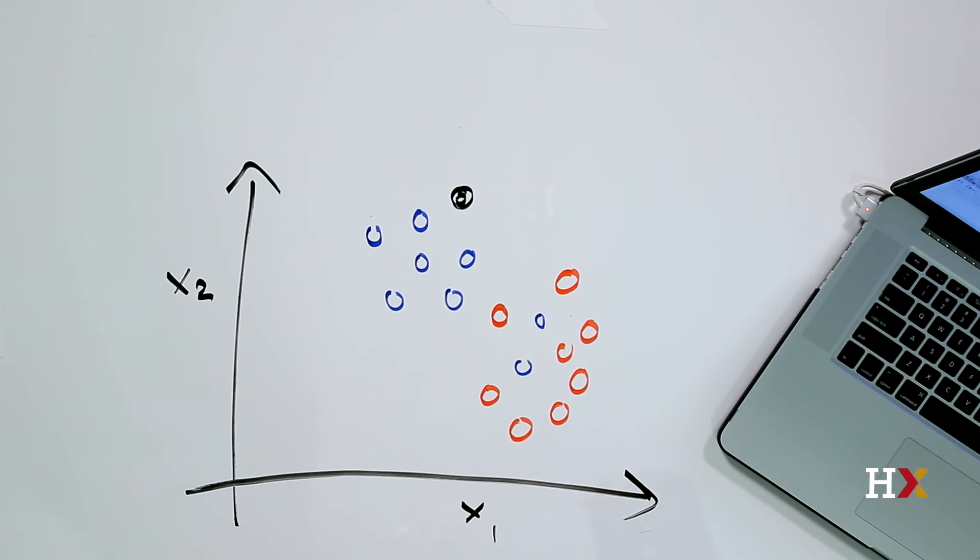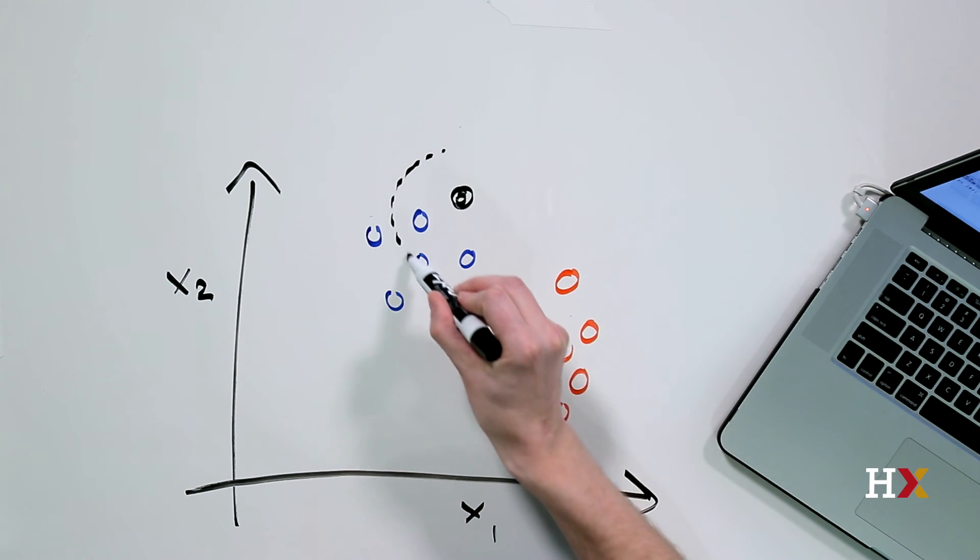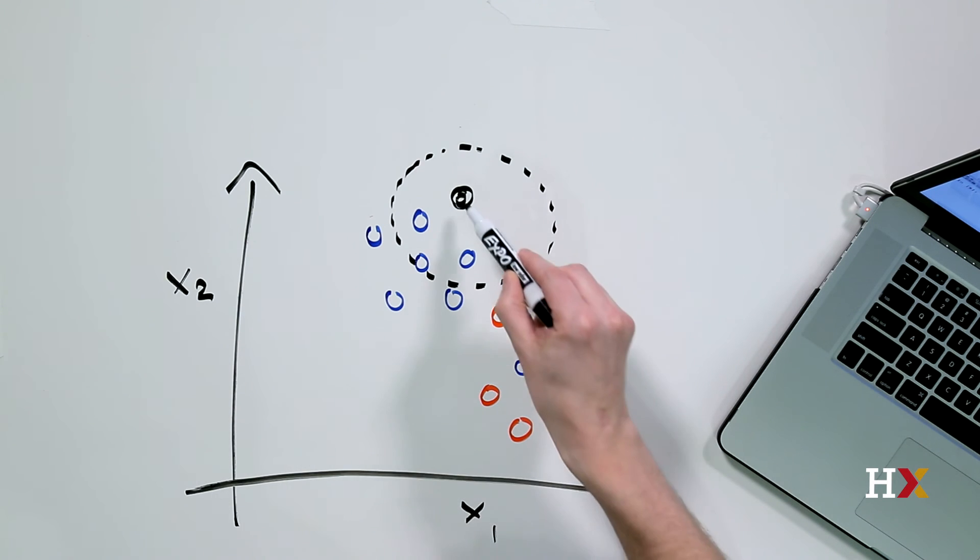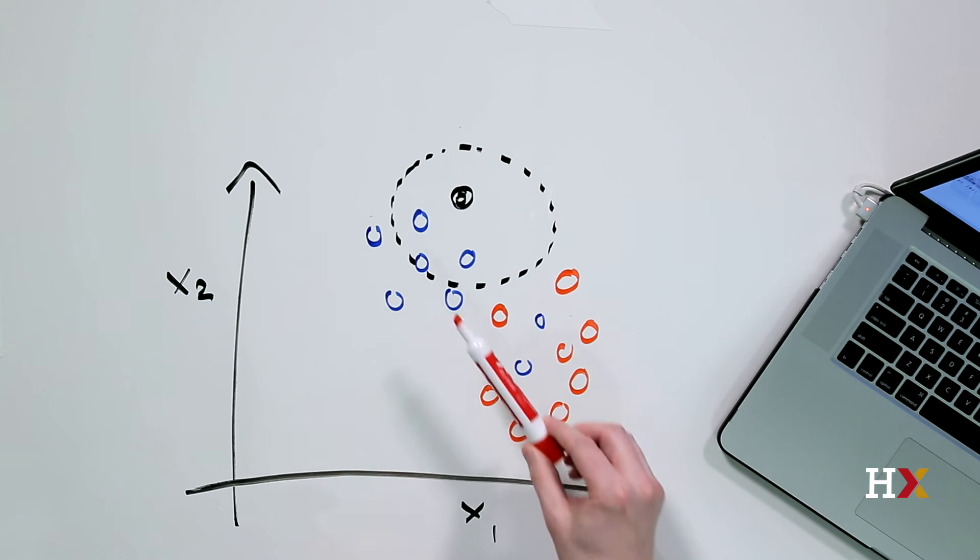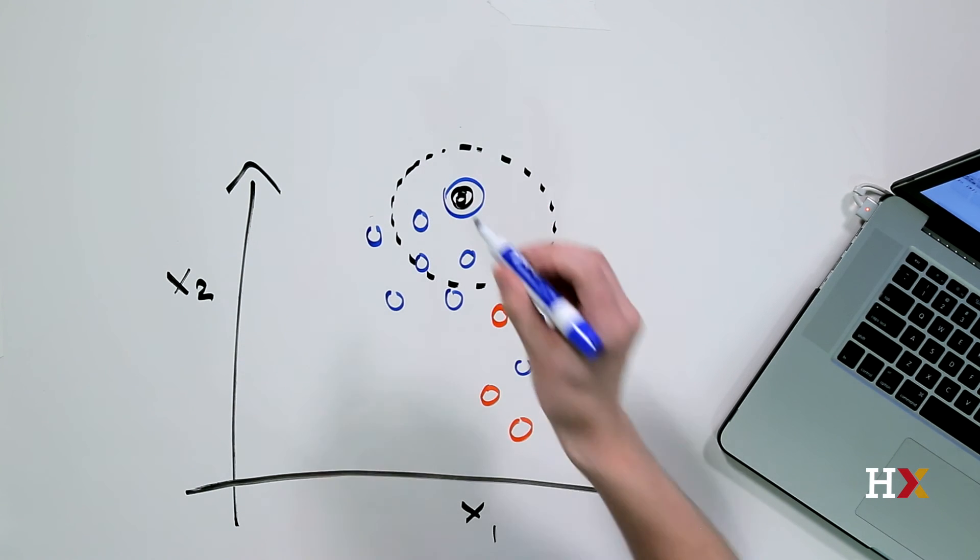What KNN does is the following. It first identifies some of the closest neighbors around it, and it assigns the black point to the category to which a majority of the points around it belong. In this case, we have three points. They're all blue, and this point gets assigned blue.